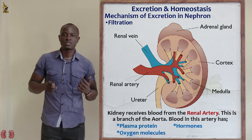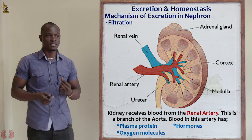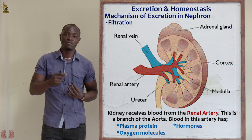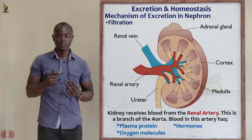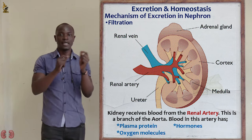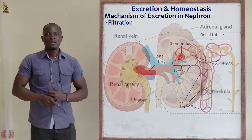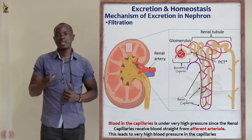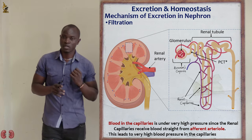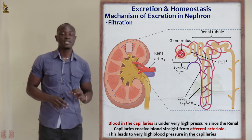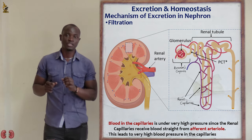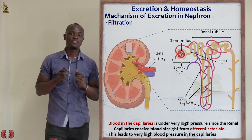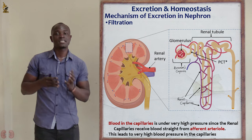Blood here contains dissolved substances like plasma proteins, hormones, and dissolved oxygen gas. That is the blood from the renal artery which now enters into the kidney. Blood flows in capillaries under very high pressure due to the narrowness of the capillaries. The aorta is very large and has high pressure. The renal artery, which is the branch of the aorta, still has very high pressure, and then it forms the afferent arteriole.